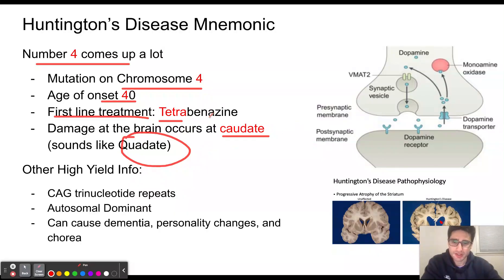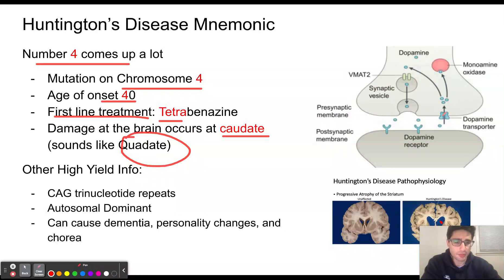Tetrabenazine is going to inhibit VMAT. Remember that VMAT is going to put dopamine into the vesicle for dopamine to then be released, so it is going to ultimately decrease dopamine levels within the synapse.